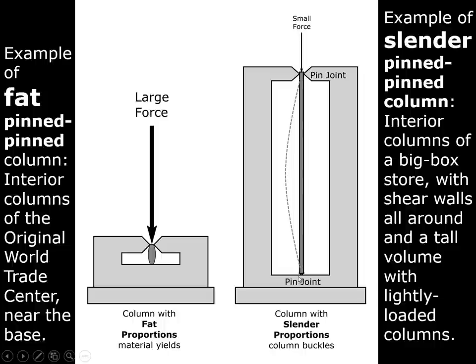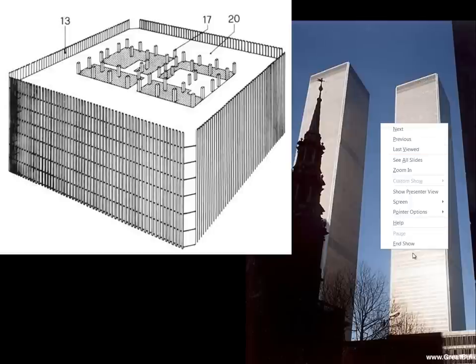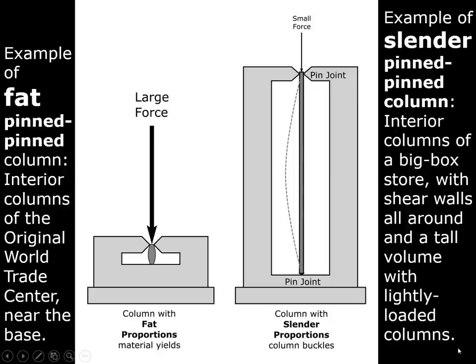An example of a slender pin-pin column is found in the interior of a big box store such as Lowe's or Walmart, where shear walls constrain the building laterally and a diaphragm roof is attached to those walls. The column supports the diaphragm roof, and the roof in turn restrains the column against lateral movement — a classic symbiotic relationship where the column supports the roof against gravity loads and the roof stabilizes the top of the column.